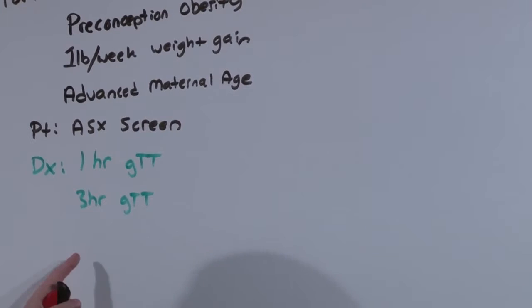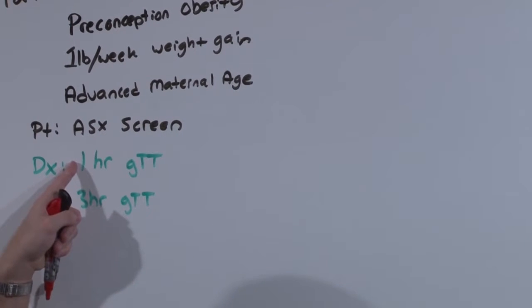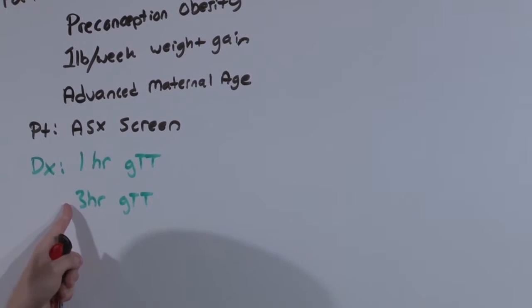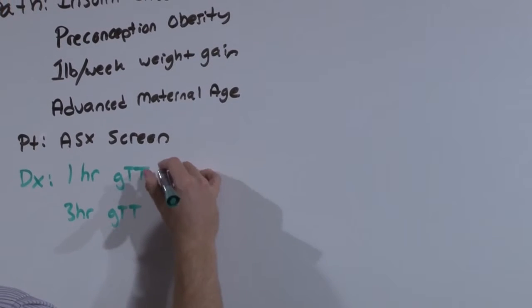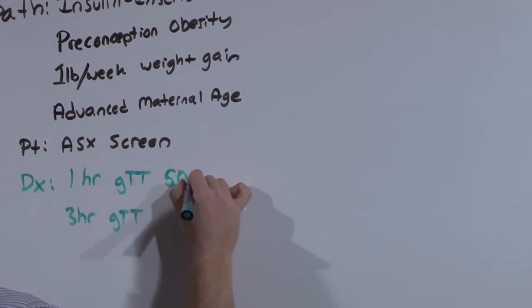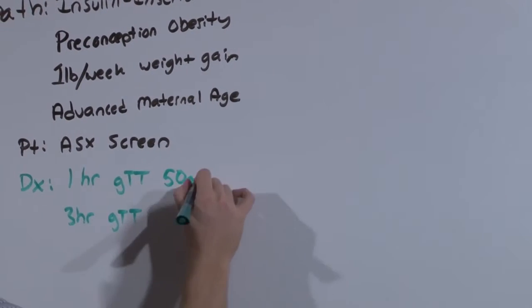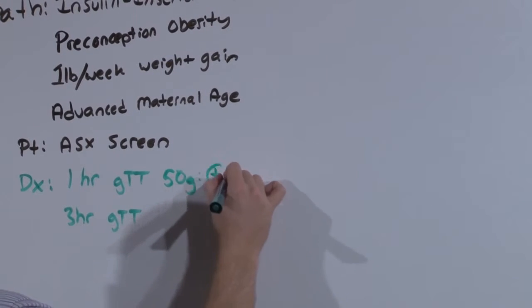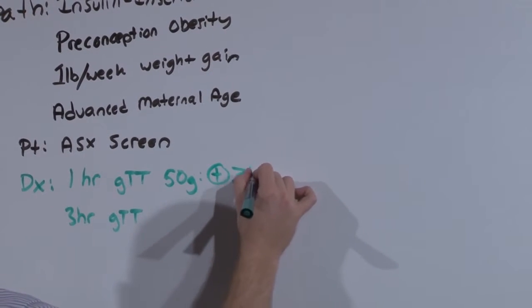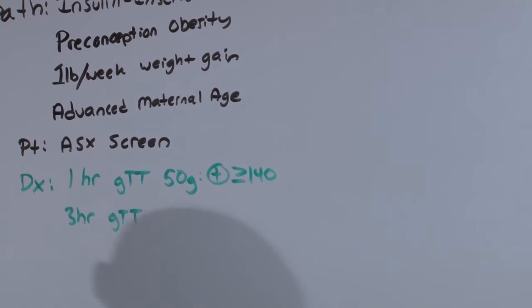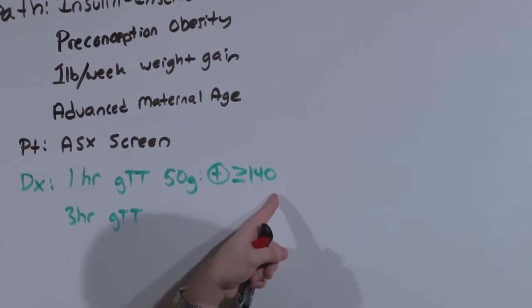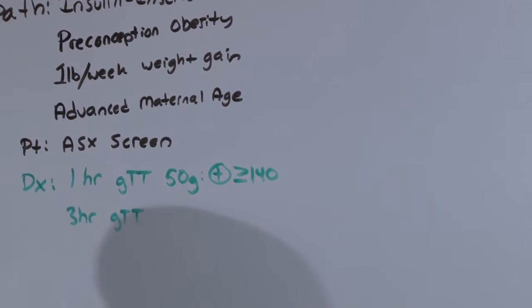So remember, if you're in the OB section, screen with a one hour glucose tolerance test, confirm with the three hour. Here's how it works. You're going to give them a 50 gram glucose oral load and check their blood sugar after one hour. The test is positive if their blood sugar is greater than 140. This is not enough to say you have gestational diabetes.